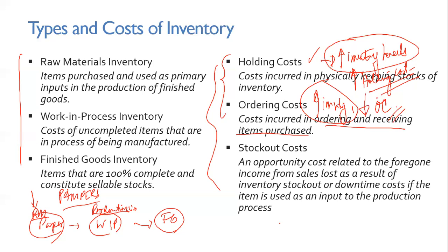Another kind of cost is stockout costs — the opportunity costs related to foregone income from sales lost as a result of inventory stockout, or downtime costs if the item is used as an input to the production process. If you have no inventory, you can have stockout costs: a potential customer wanted to buy but couldn't because there was no stock. The foregone revenue is a cost of holding less inventory.